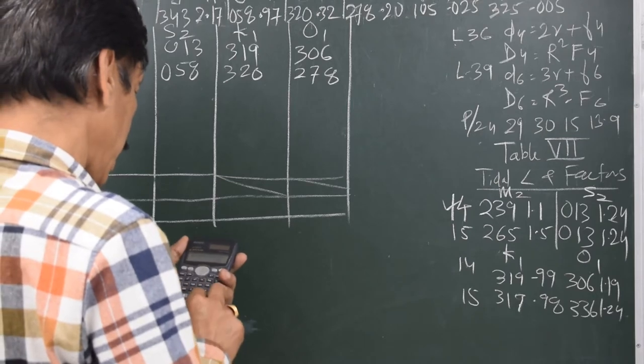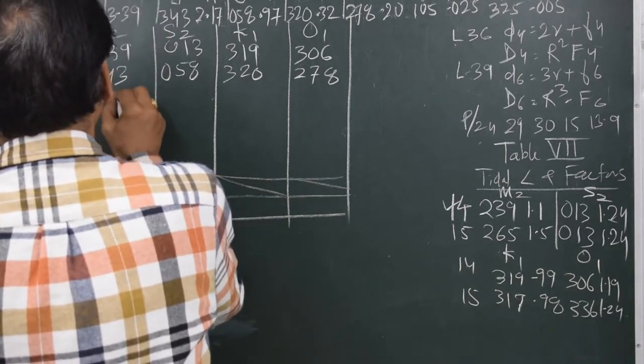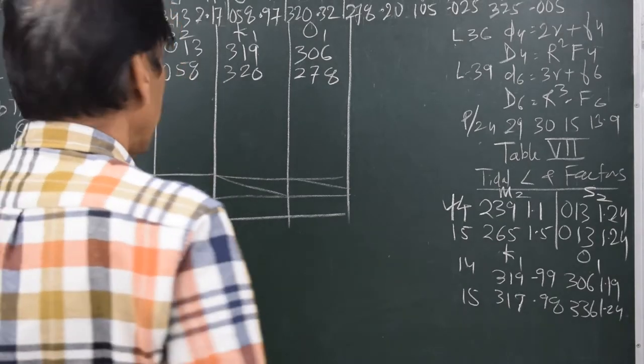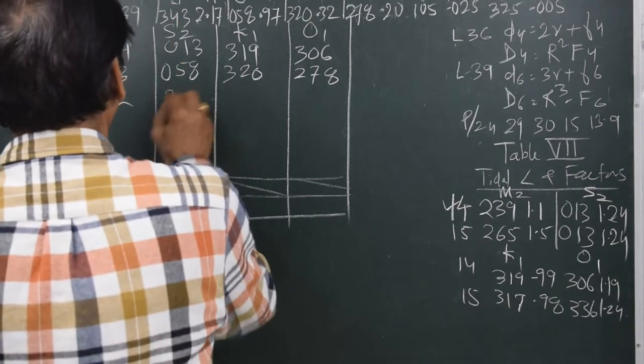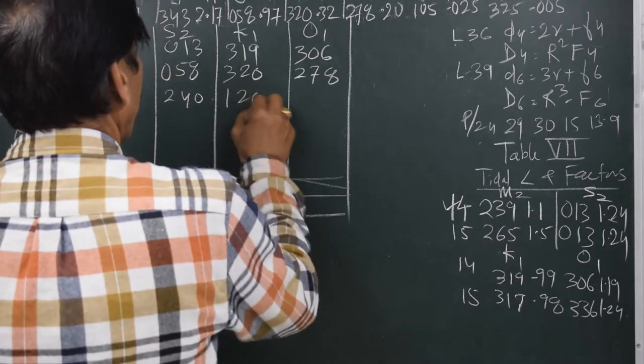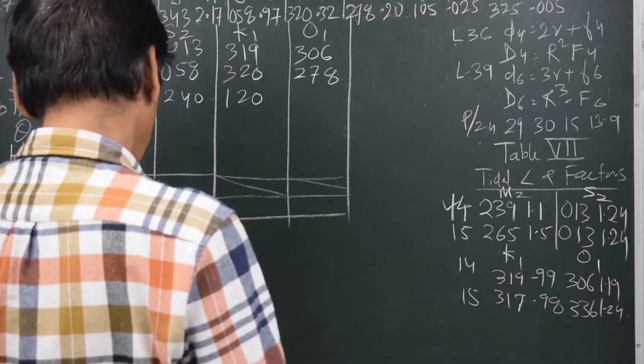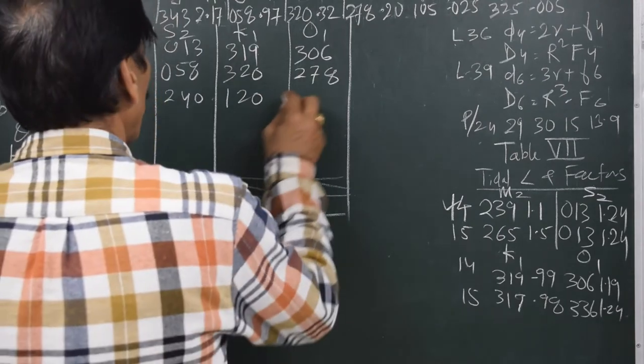So 29 into 8 makes it 232 here. And 30 into 8 makes 240 here. 15 into 8 makes 120 here. And 13.9 into 8 makes it 111.2.